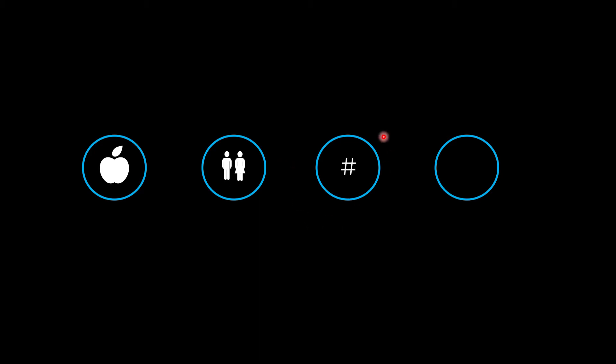The third property is number. In Arabic there is the singular, dual, and plural. The plural can be further divided into the sound plural and the broken plural.